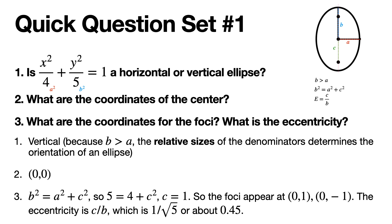For a vertical ellipse, b squared equals a squared plus c squared. Plugging in b squared equals 5 and a squared equals 4, we solve for c and get c equals 1. The foci appear at (0, 1) and (0, -1) because the transverse axis is vertical. The eccentricity is c over b, which is 1 over the square root of 5, approximately 0.45 — and recall that the eccentricity of an ellipse is less than 1, so that checks out.